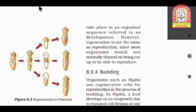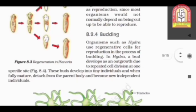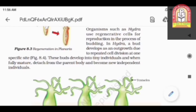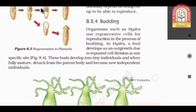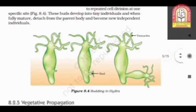Next one is budding. Organisms such as Hydra use regenerative cells for reproduction in the process of budding. In the budding process, you can take example of Hydra. In Hydra, a bud develops as an outgrowth due to the repeated cell division at one specific site.